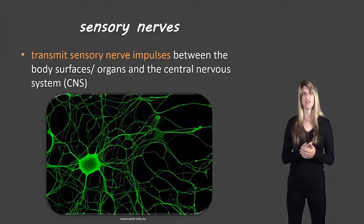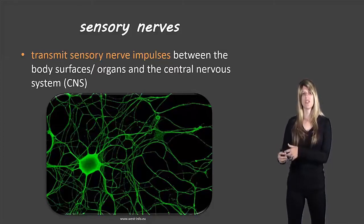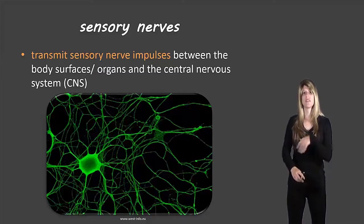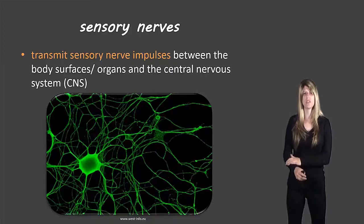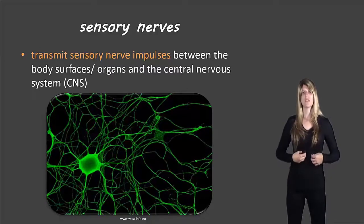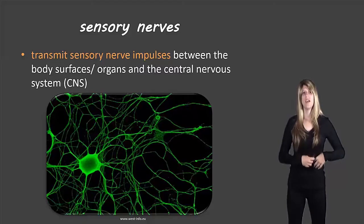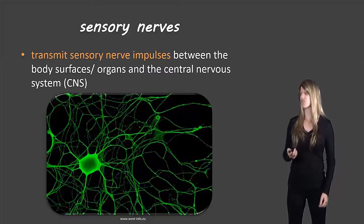Sensory nerves take information from outside — for example, if you feel a cool breeze on your skin, that sensation will be transferred to your central nervous system. Or inside, if you have a pain in your gut, it will send that information to your central nervous system.